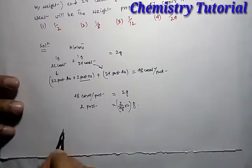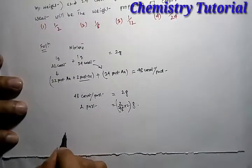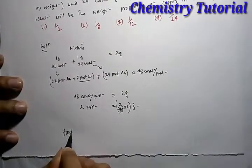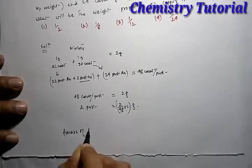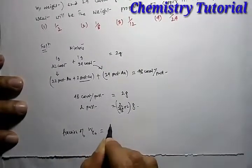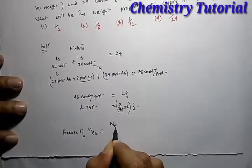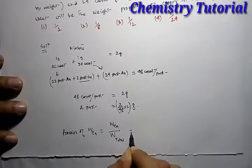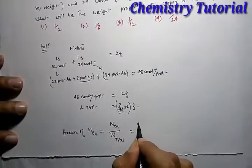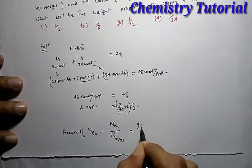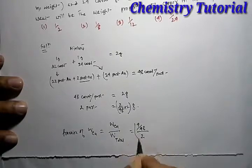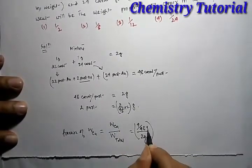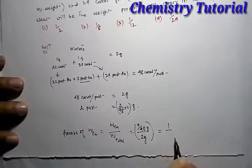Therefore, fraction of 1 gram. Weight of copper will be weight of copper over total weight. Weight of copper is 4 by 48 divided by 2 grams. This is 2 grams. Equal to 1 by 24.